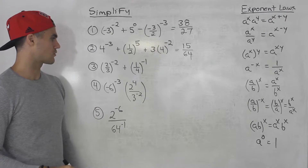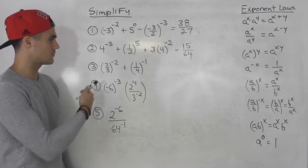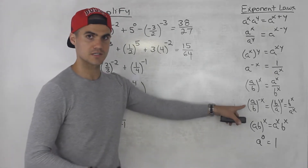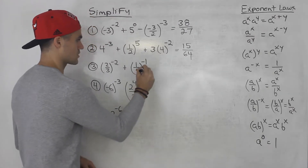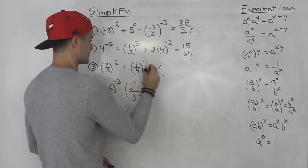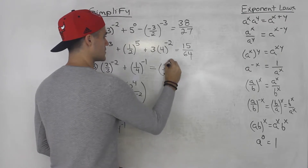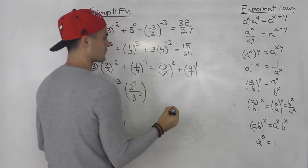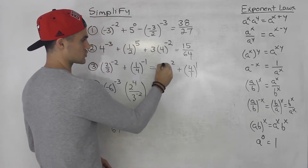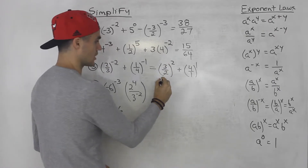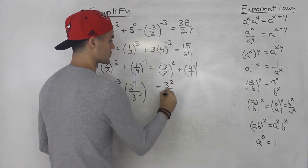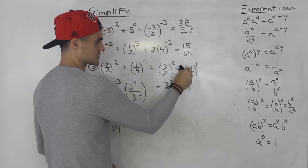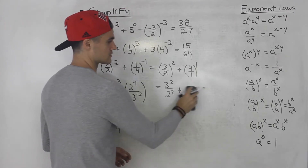Moving on to number three, we got two over three to the power of negative two, plus one over four to the power of negative one. Fractions to a negative exponent — using this law, flip the fraction and turn the exponent to a positive. So this ends up being three over two to the power of two, plus four over one to the power of one. We distribute the exponent to the numerator and denominator: three squared over two squared, plus four to the power of one. Four over one to the power of one is just four.